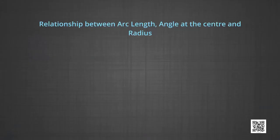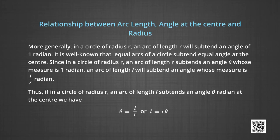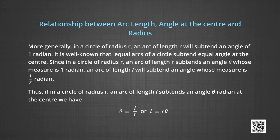Lastly, we are going to study the relationship between the arc length, angle at the centre, and radius. In a circle of radius r, an arc of length r will subtend an angle of 1 radian. Since equal arcs of a circle subtend equal angles at the centre, an arc of length l will subtend an angle whose measure is l/r radians. Thus, if in a circle of radius r an arc of length l subtends an angle theta at the centre, then theta is equal to l/r, or l is equal to r·theta.